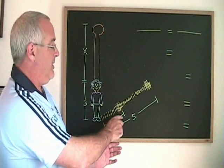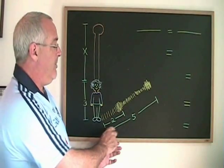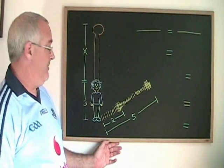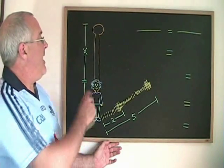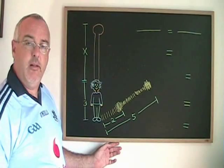Emma's shadow is two units long and the flagpole's shadow is five units long. Emma is three units tall. How much taller than Emma is the flagpole?